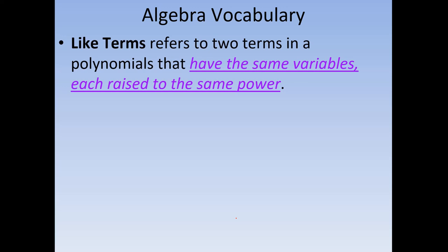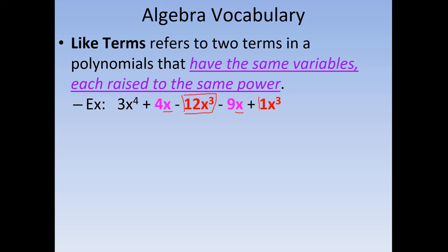The next phrase is like terms. Like terms refers to polynomials where you have multiple terms that have the same variable and the variables are all raised to the same power. In this polynomial, 4x and 9x are like terms because they both have an x with no power — not raised to any specific number. Likewise, 12x cubed and 1x cubed are like terms because they have the same variable x and both are raised to the same power. Something like 9xy plus 4x may not be considered like terms because one does not have a y involved.